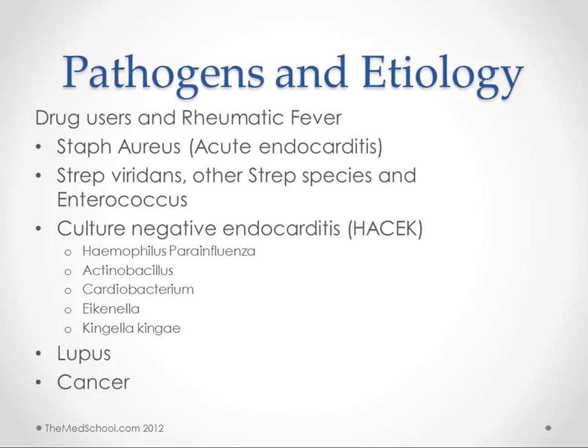So: Haemophilus parainfluenzae, Actinobacillus, Cardiobacterium, Eikenella, and Kingella kingae. Eikenella and Kingella kingae are both associated with bites. So if you've been bitten by somebody and think you have endocarditis, please tell your doctor to order a workup for HACEK.